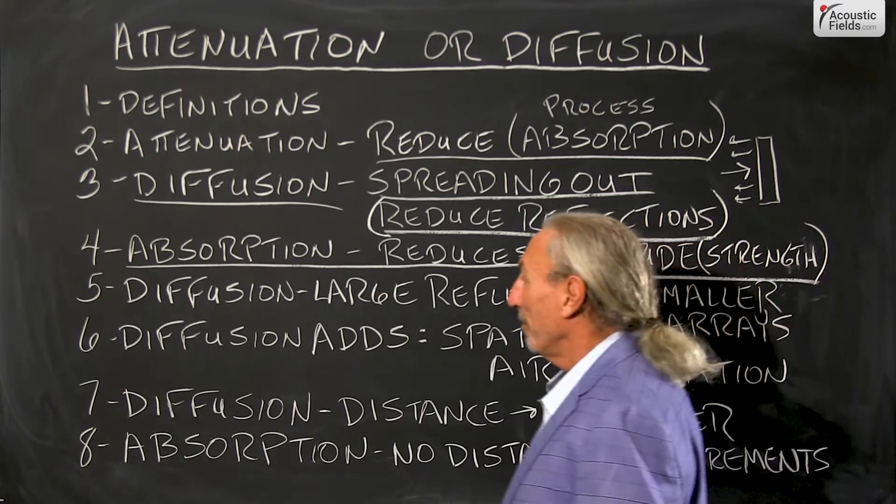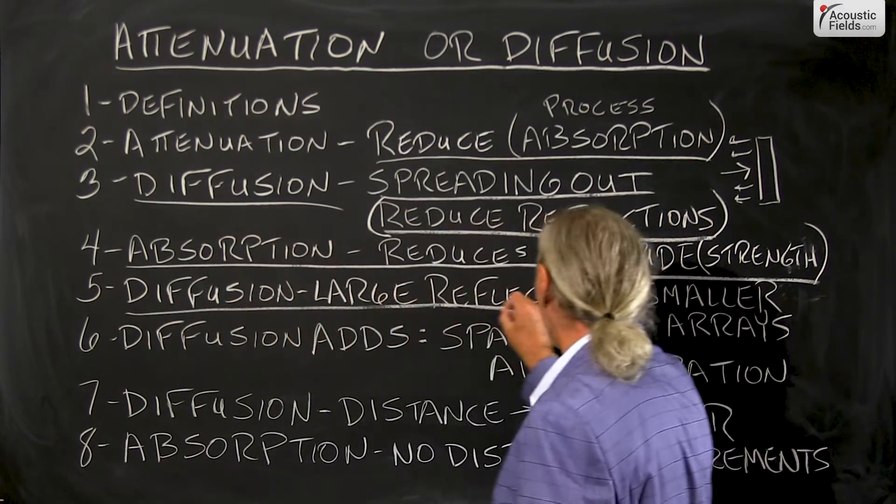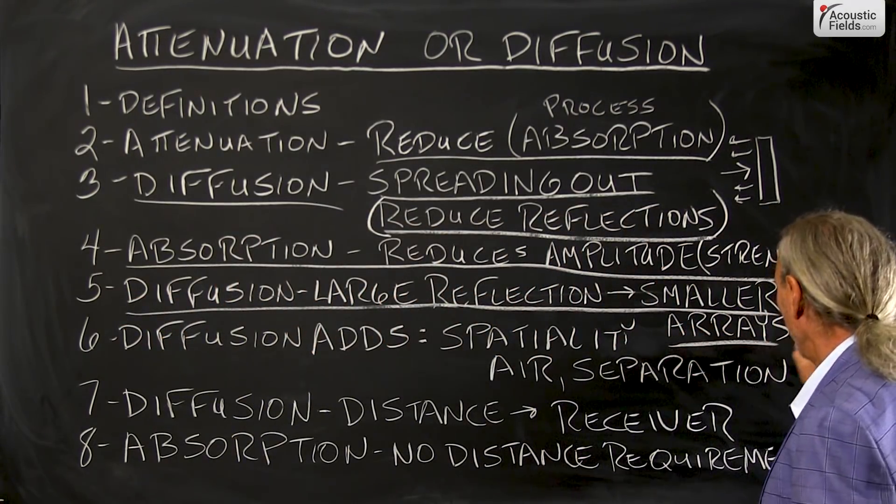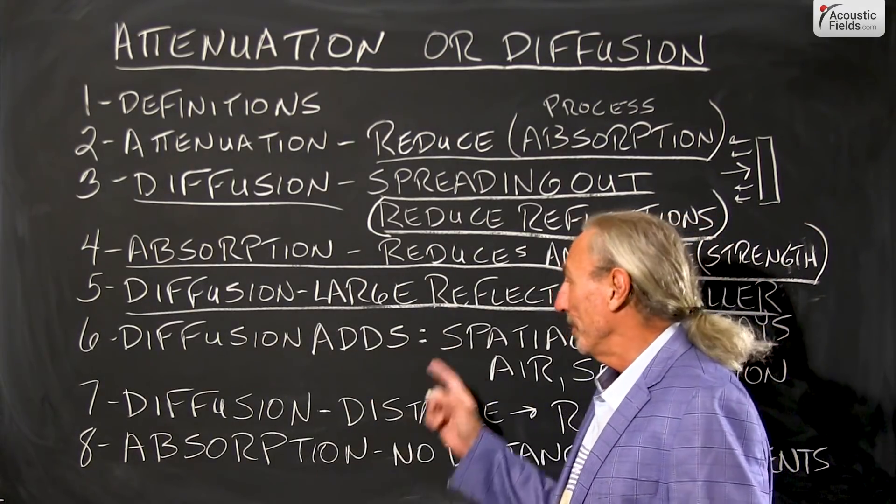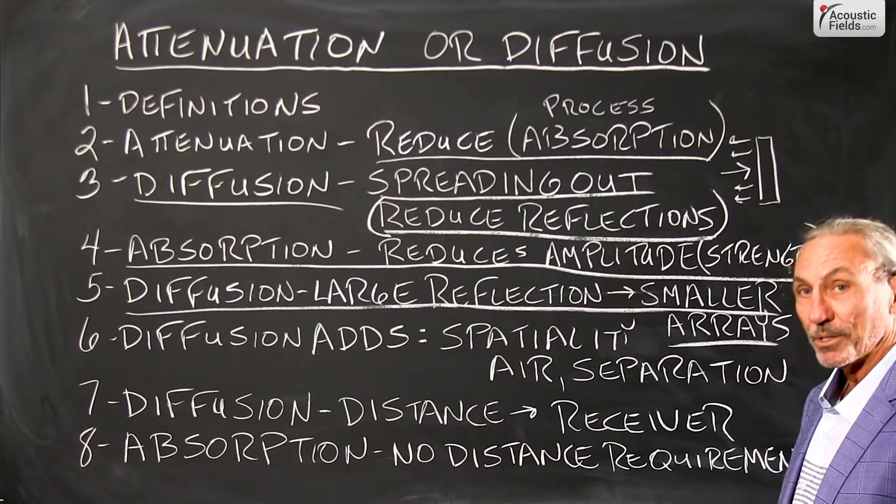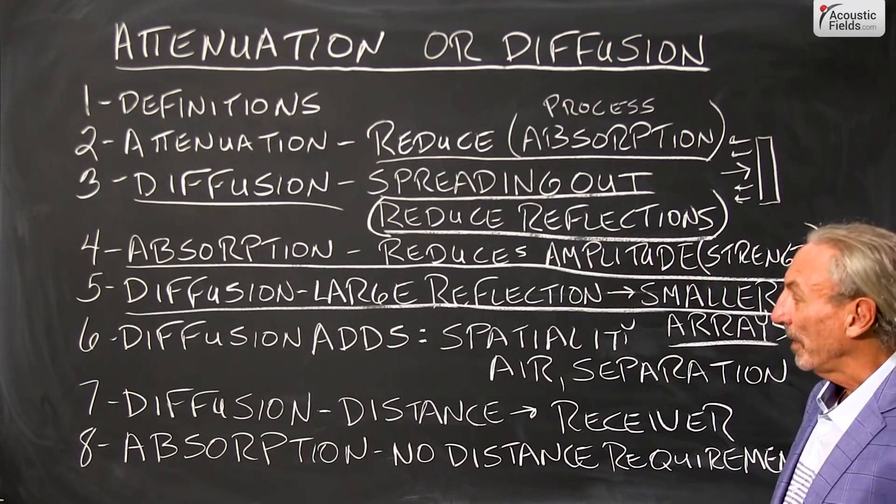So diffusion like we talked about before takes large reflections and produces them in smaller rays. So what do we get with diffusion that we don't get with absorption which is the process that we use for attenuation?